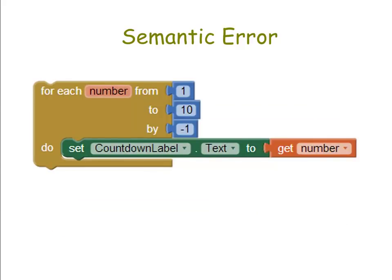Here's another semantic error example — a loop that's supposed to do a countdown from 10, changing a label to display the current number. When you look at the loop, it starts at 1 and goes up to 10, but decrements by negative 1. If it starts at 1 and decreases by 1, it goes to 0, then negative 1, and will never reach 10. The fix is to swap the 'from' and 'to' values so it reads: from 10, to 1, by negative 1, so it correctly counts down from 10.